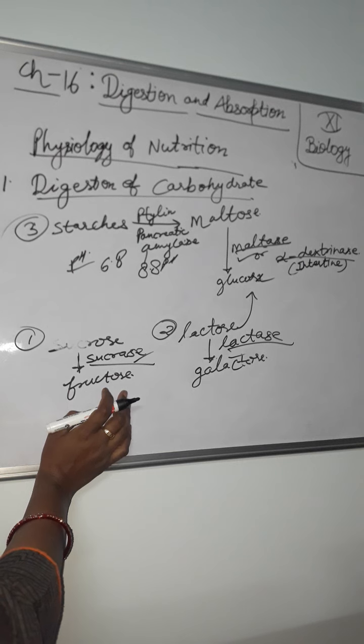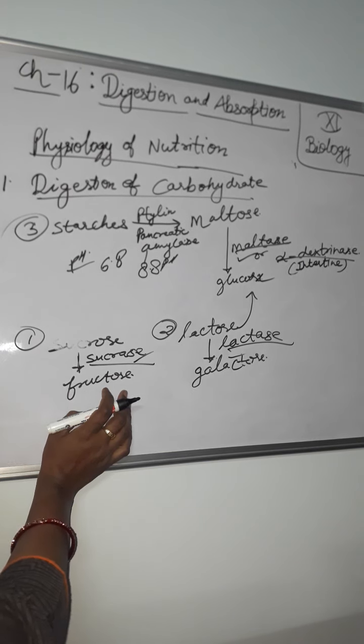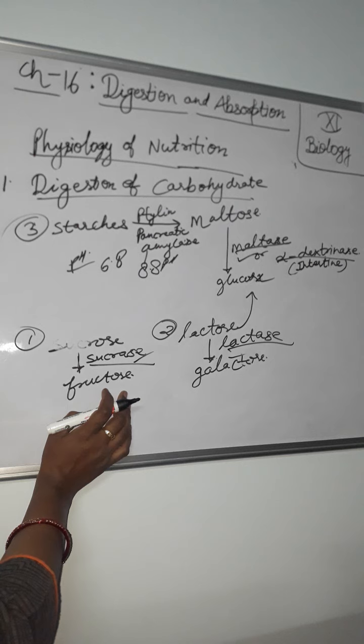And cellulose also present - in cellulose, with the help of cellulase enzyme, converts into acetic acid and propionic acid.